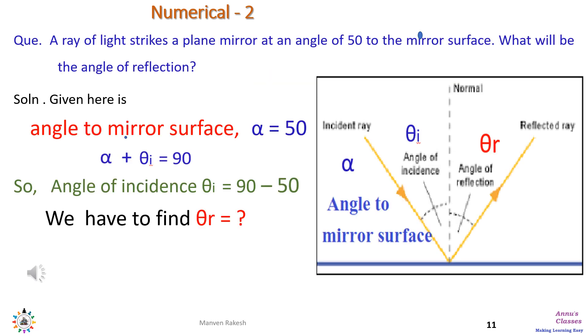There is a slight difference here. We are given the angle to mirror surface, not the angle to the normal. So we are not given angle of incidence. Let us see what is given. We are given angle to mirror surface α equals 50 degrees.